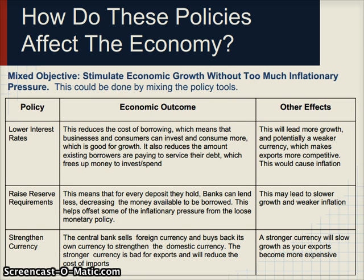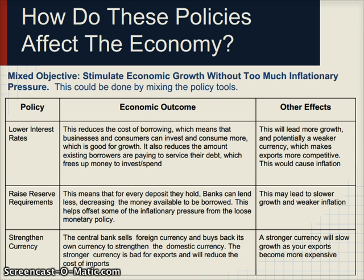What if the central bank wanted a mixed objective — stimulating economic growth without too much inflationary pressure? This could be done by mixing tools: lower interest rates to reduce borrowing costs and increase demand, while simultaneously raising reserve requirements to offset some of that lending growth, and perhaps strengthening the currency slightly to keep imported inflationary pressures weak. The central bank would be stimulating the economy while constraining it in some ways to achieve stronger growth without too much inflation.